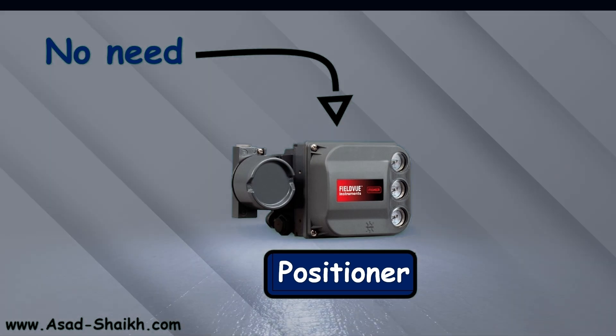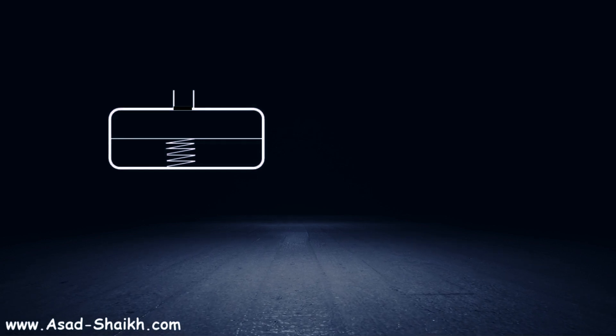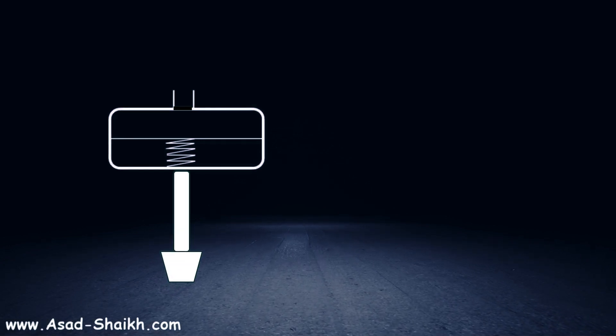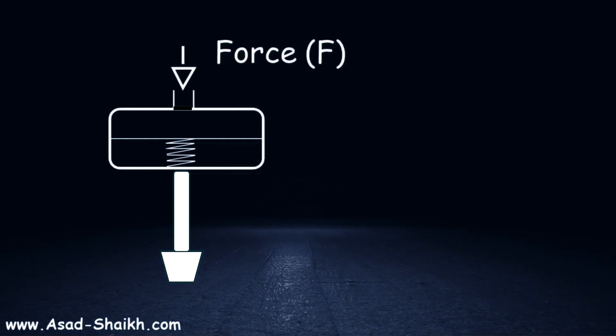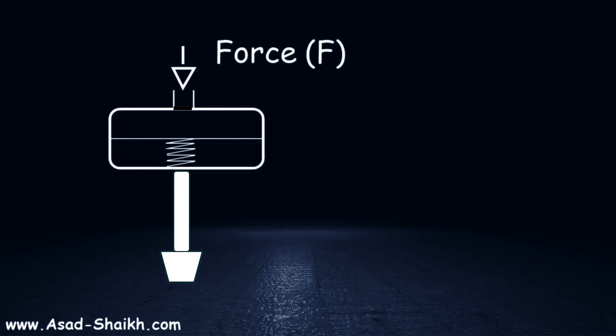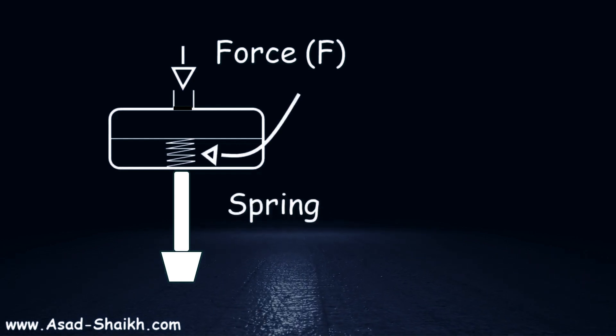We'll understand with the help of Hooke's Law. Imagine that we have an actuator assembly here which is connected to our plug and seat assembly. The force will come from the upper direction because it is an air to open valve, so the air pressure force will come here and that will basically have displacement of the spring, let's call it x.